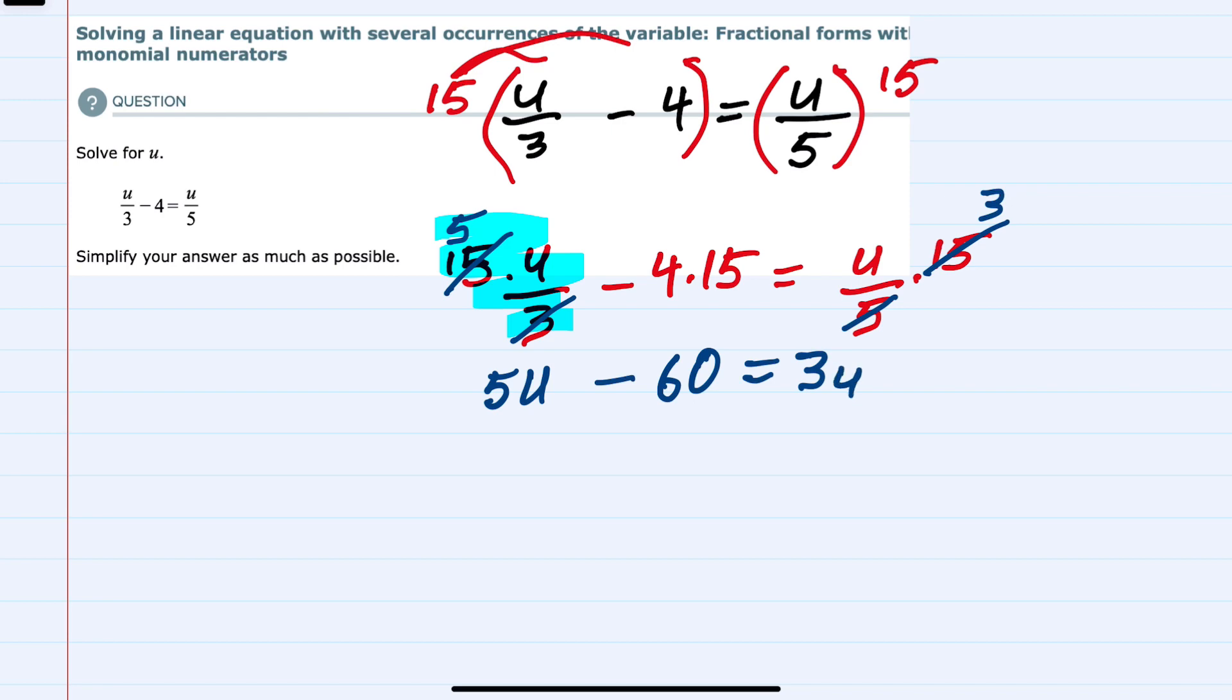We can see that by multiplying both sides and every term on both sides by the lowest common denominator, here 15, I have rewritten the equation, and now with no fractions.